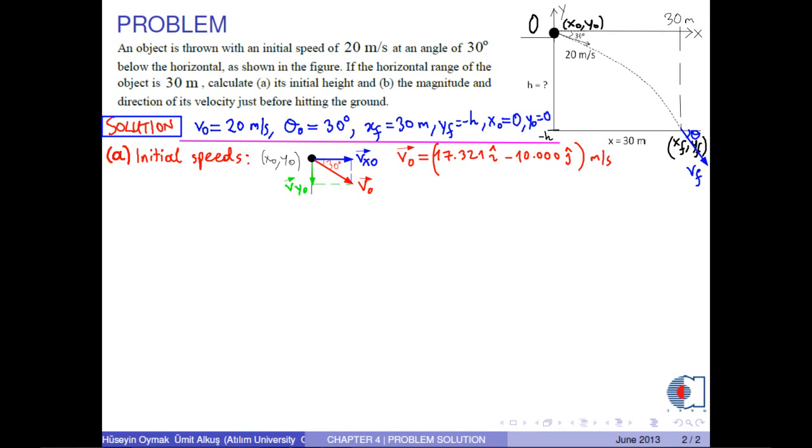Now, we shall find the flight time using the range of the motion, that is, the x component of the final position. Then, we use this formula. Here, x0 is 0.